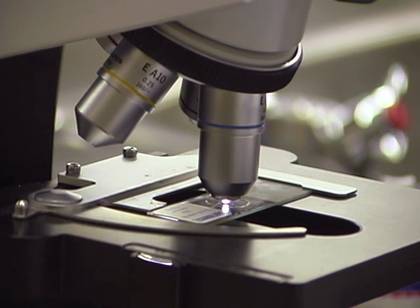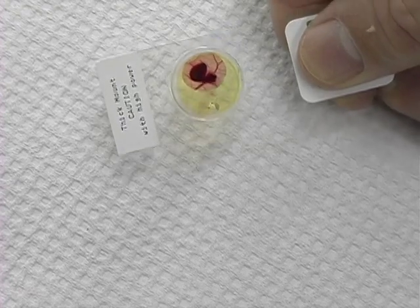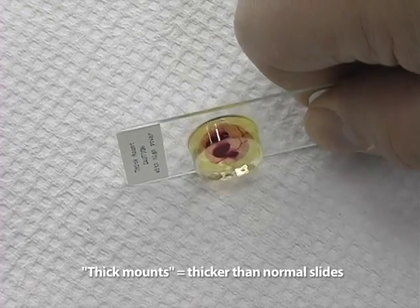Today's microscopes are usually designed so that the highest objective lenses cannot break regular slides. However, at higher magnifications, it is possible to break thicker slides. Such slides are usually called thick mounts.